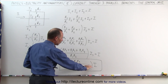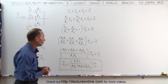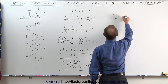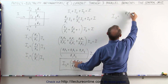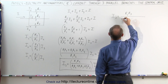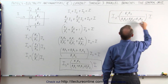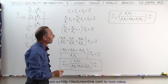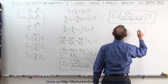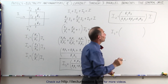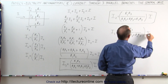Notice that the denominator is always the same, and the numerator contains the product of the resistors in the other two branches. So I2 equals R1 times R3 divided by R1 times R2 plus R1 times R3 plus R2 times R3, multiplied times the total current I. And I1 equals R2 times R3 divided by the same denominator, R1 times R2 plus R1 times R3 plus R2 times R3, multiplied times the total current.